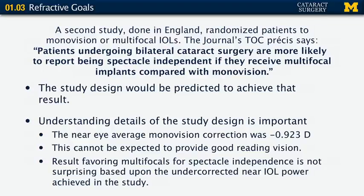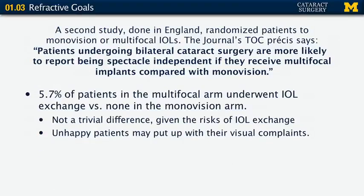In this study, the near-eye average monovision correction was only minus 0.923 diopters. This kind of near-vision correction would never be expected to provide good reading vision except with a tiny pupil in very bright light. So a result that favored multifocal IOLs for spectacle independence isn't at all surprising based on the undercorrected near intraocular lens power. An important finding is that nearly 6% of the patients in the multifocal arm underwent lens exchange compared to none of the monovision patients — and the risks of intraocular lens exchange are very important to the patient.